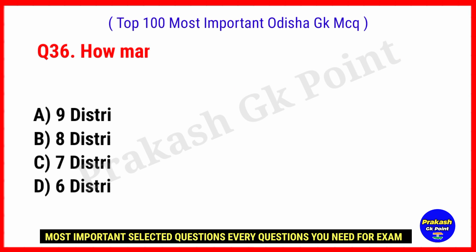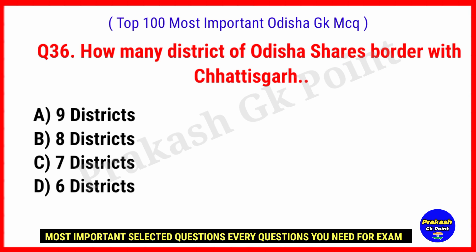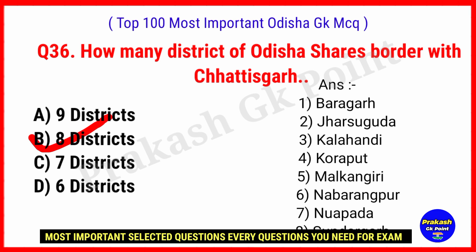How many districts of Odisha share a border with Chhattisgarh? Answer: Option B, 8 districts — Bargarh, Jharsuguda, Kalahandi, Koraput, Malkangiri, Nabarangpur, Nuapada and Sundargarh.